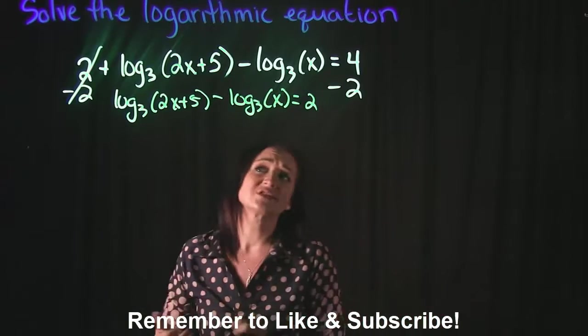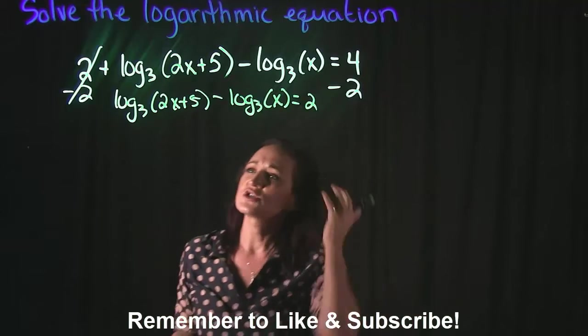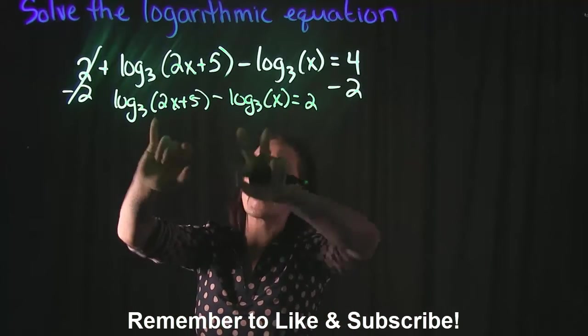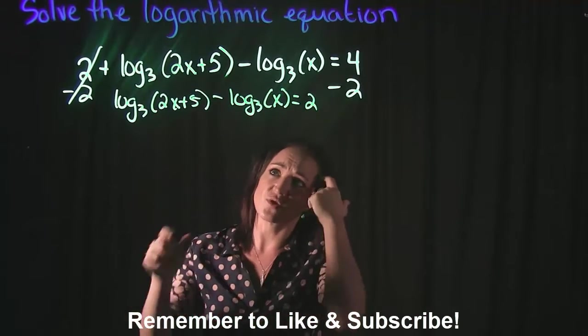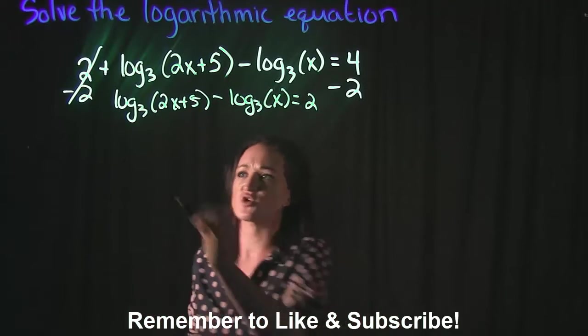Then I'm going to use my log properties here to condense these down. So I see that I have, they're both log base 3, we're subtracting them. If you remember from your log properties, when you have a subtraction, that correlates to a division.